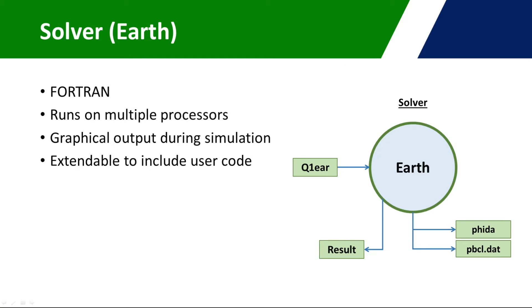The solver code is called Earth. It is written in Fortran and can run in single or double precision on multiple processors. There is an option to compile custom versions of Earth that include the user's own Fortran code for a wide variety of uses. The solver uses the Q1 Ear file to define its sequence of execution and produce solution files. The primary solution files are the so-called result file and the FIDA file. You are able to specify other intermittent output files. The result file contains a detailed text summary of how the simulation progressed, and the FIDA file is fed into the post-processor to display results.